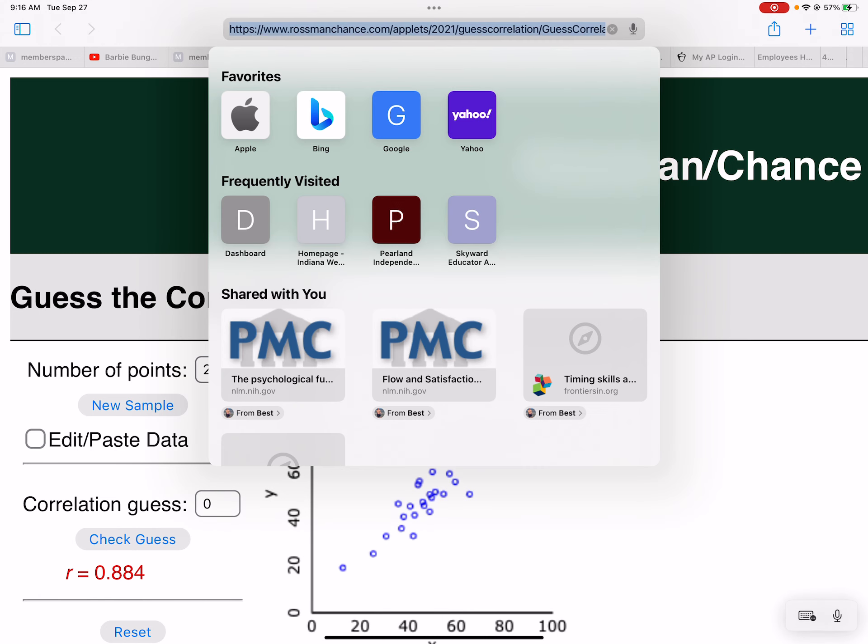And here's the website. It's just if you go to Ross Merchants and their applets and guess correlation.